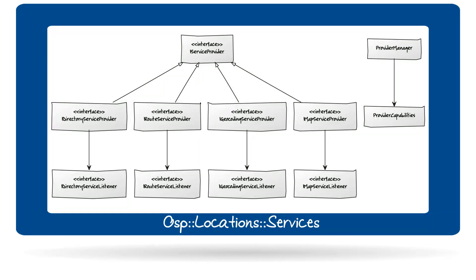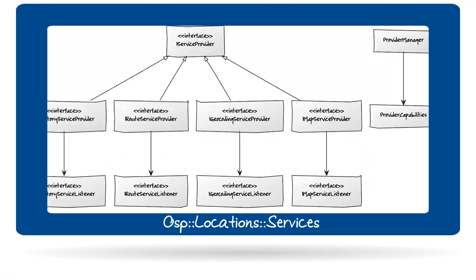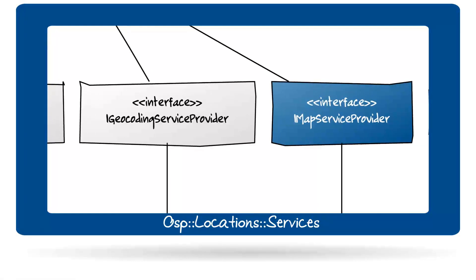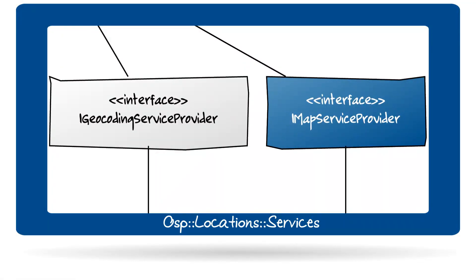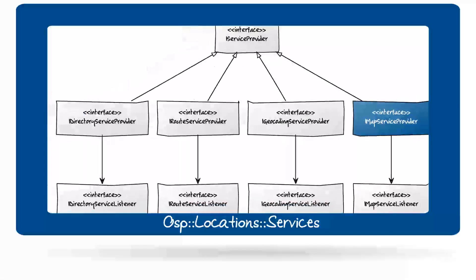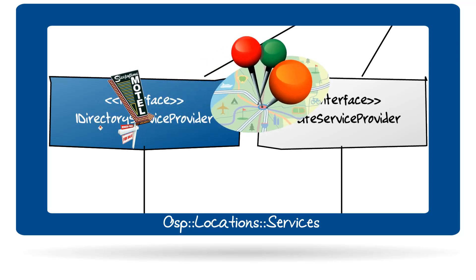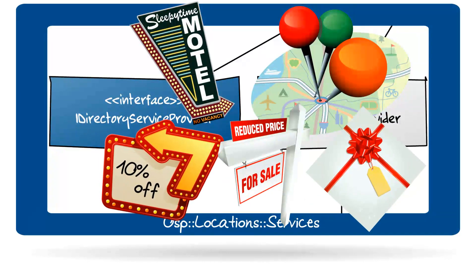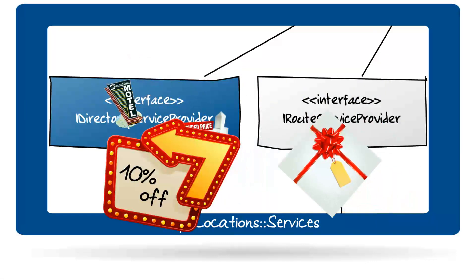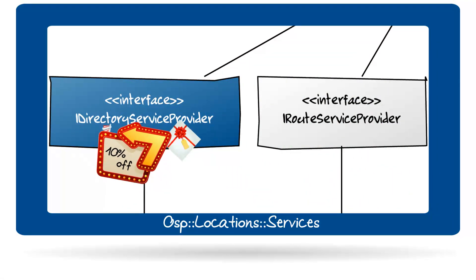The namespace OSP Location Services provides a number of useful services. One is encapsulated in the IMapServiceProvider interface, through which applications request map-related services from a map service provider. The IDirectoryServiceProvider interface accesses services offered by directory service providers — for instance, the application can request search data for nearby places, products, or services.